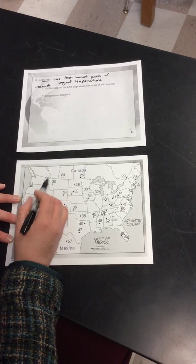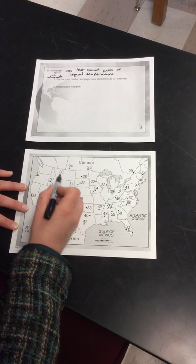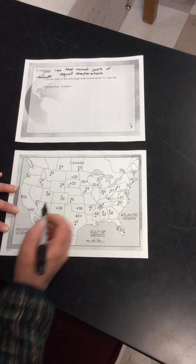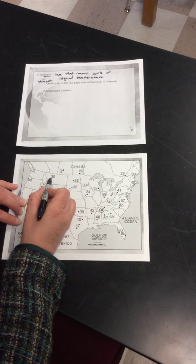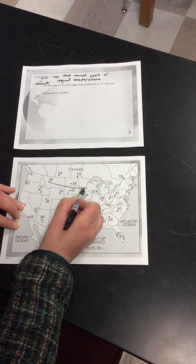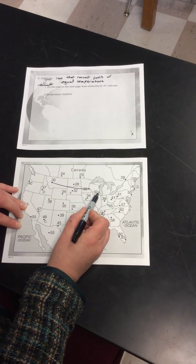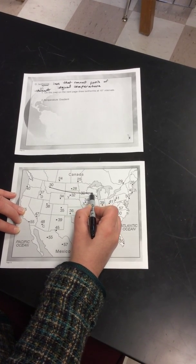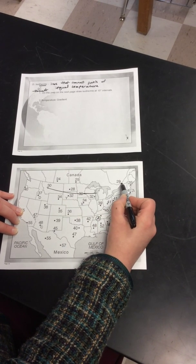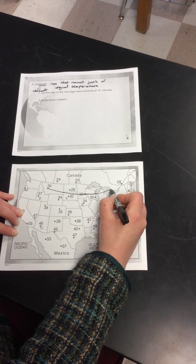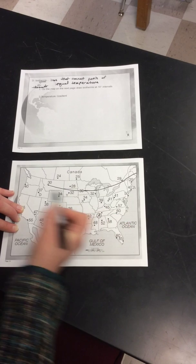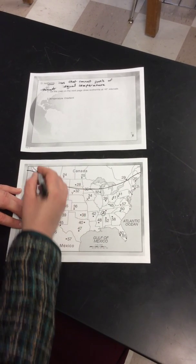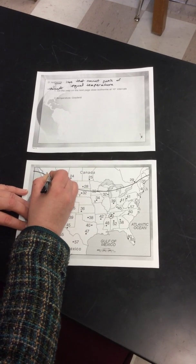If we start with 30 here, we want to connect 30 to the 30 that's here between 28 and 32. This 32 is higher in temperature, so we're going to go above 30 and head towards where we have 29 and 35. 29 is colder, so we're going to take that over to the edge of the map. This will be 30 degrees Fahrenheit.